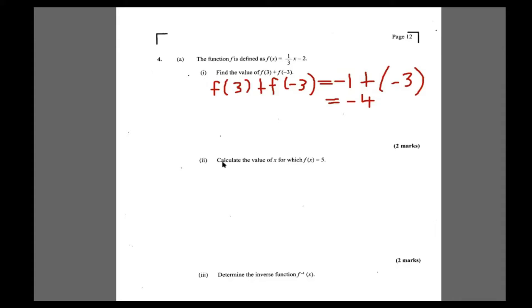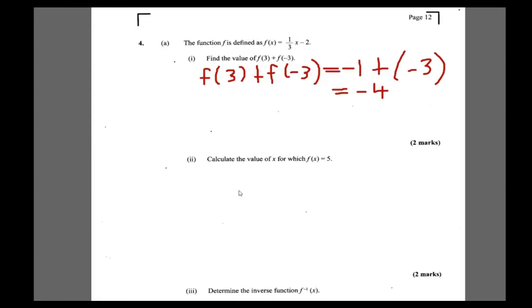Next, calculate the value of x for which f(x) = 5. So you're going to set f(x) equal to 5: 1 over (3x - 2) = 5.